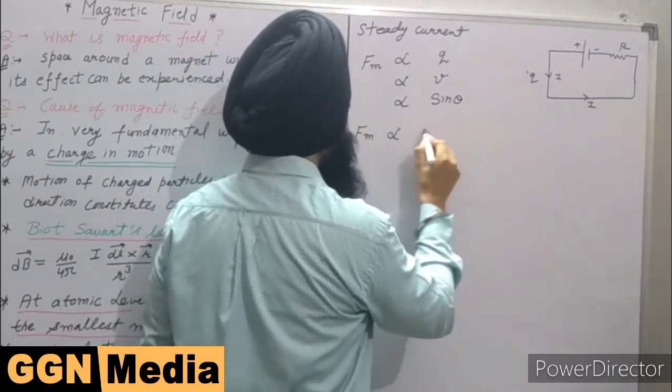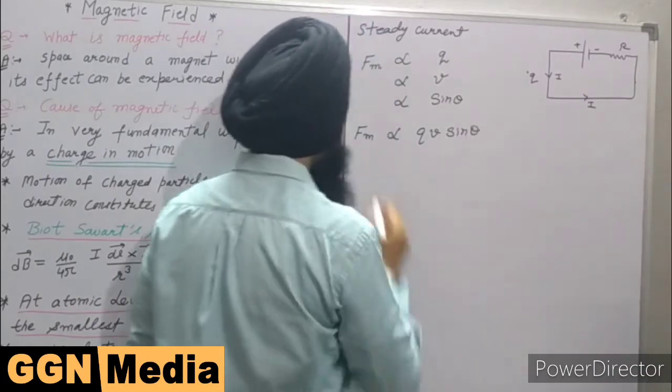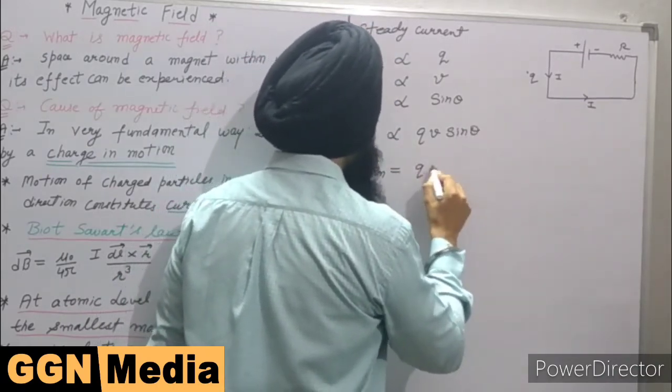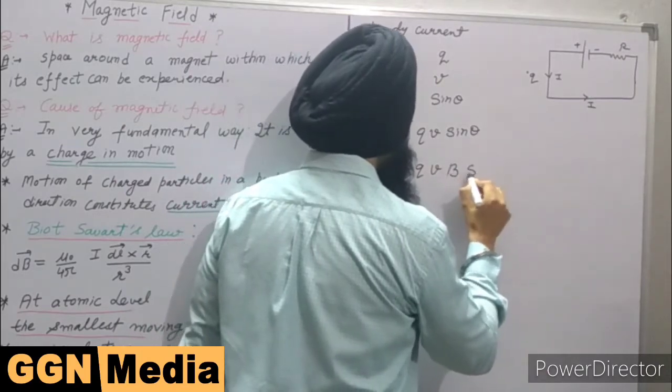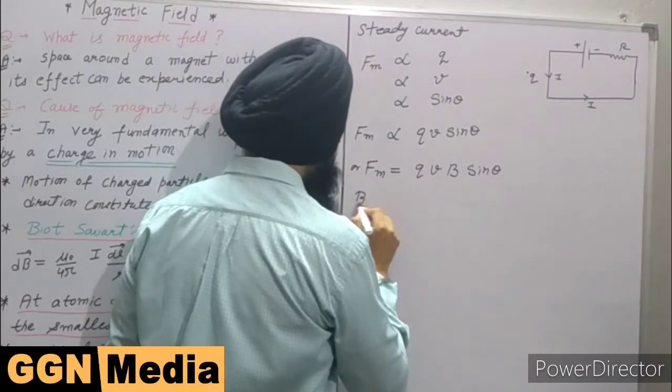If I combine all these things, we will get Fm is proportional to qv sin theta, or Fm is equal to qvB sin theta. So this B is called magnetic field.